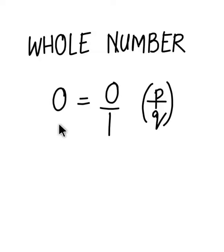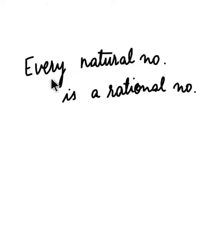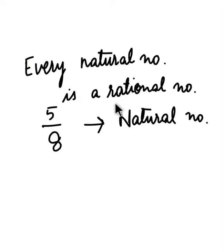Similarly, a whole number like 0 can also be written as 0 by 1, which is rational number format P by Q. So a whole number can also be written as a rational number, and we can say every whole number is a rational number, but every rational number is not a whole number. Likewise, every natural number is a rational number, but every rational number is not a natural number. For example, 5 by 8 is a rational number, but it is not a natural number.